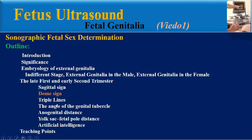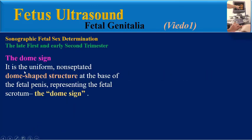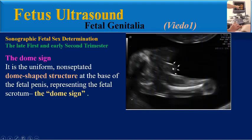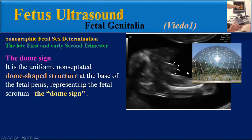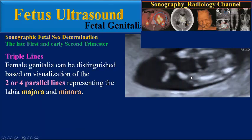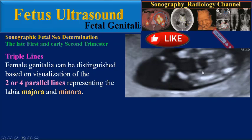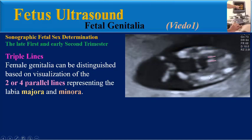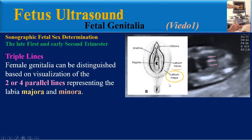The dom sign is the uniform, non-septated, dome-shaped structure at the base of the fetal penis representing the fetal scrotum, known as the dom sign. Triple lines: Female genitalia can be distinguished based on visualization of two to four parallel lines representing the labia majora and minora.